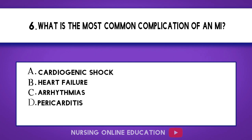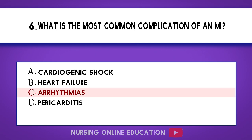Question 6. What is the most common complication of an AMI? A. Cardiogenic shock. B. Heart failure. C. Arrhythmias. D. Pericarditis. The answer is option C: Arrhythmias.